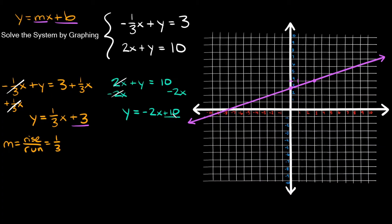The y-intercept is positive ten, so plot a point there on the y-axis. The slope is negative two, or negative two over one, meaning go down two and over one. Starting from the y-intercept, go down two and over one to find the second point, then draw a straight line.